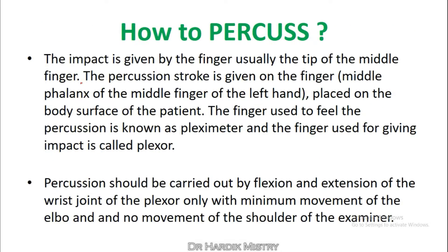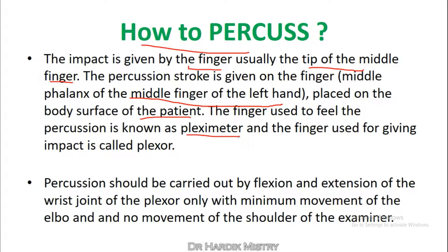To percuss, the impact is given by the finger — usually the tip of the middle finger. The percussion stroke is given on the middle phalanx of the middle finger of the left hand, which is placed on the body surface of the patient. The finger used to feel the percussion is known as the fleximeter.